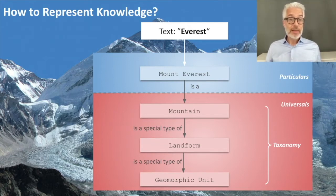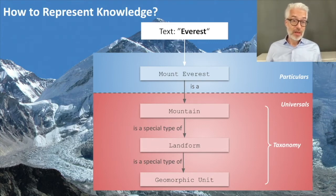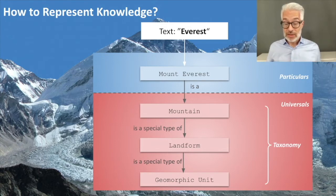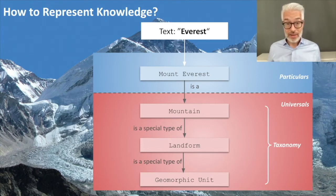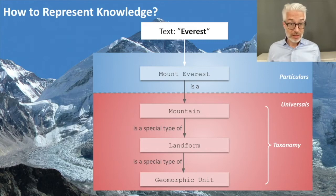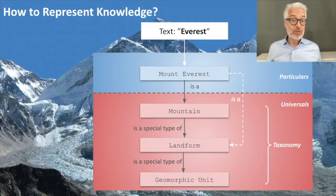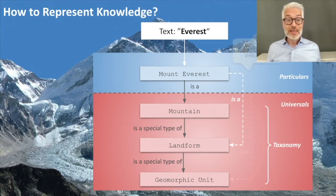Among these universals there might be a kind of ordering. Any kind of mountain is a special type of a landform, and a landform is also a special type of some geomorphic unit. This kind of hierarchy among concepts forms a so-called taxonomy — a hierarchy for classifying and categorizing things. We can see that Mount Everest is a mountain, a mountain is a special type of landform, and a landform is a special type of geomorphic unit. Therefore, Mount Everest is also a landform, and also a geomorphic unit.